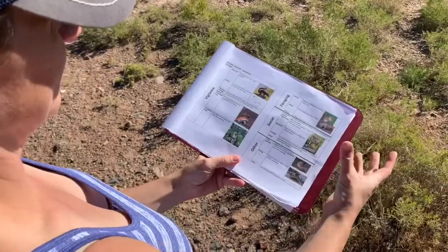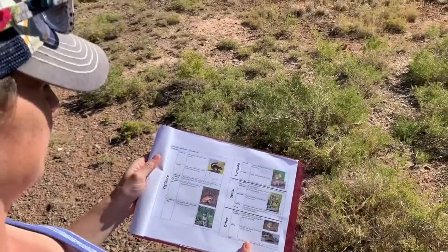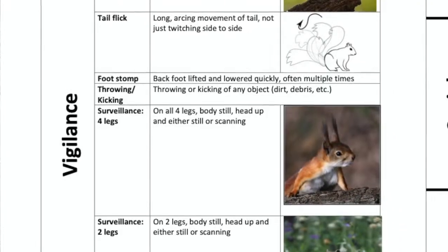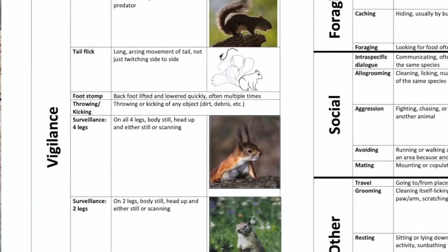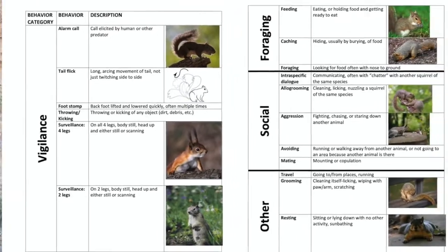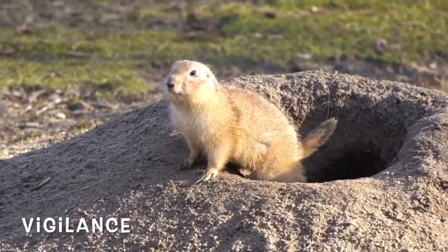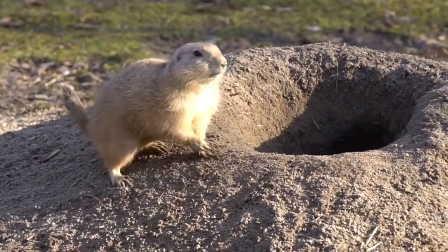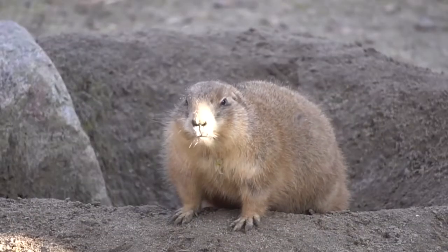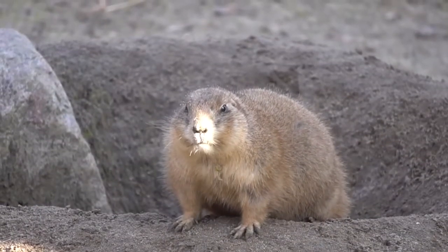Our ethogram categorizes most of the behaviors a squirrel would possibly be observed doing into four broad categories: vigilance, foraging, social behaviors, and other behaviors. Vigilance involves an animal with its head up, alertly looking around for predators. Sometimes squirrels will be on two feet, sometimes on four feet — it depends on the species. You can also include alarm calls when an animal is vocalizing in this category.